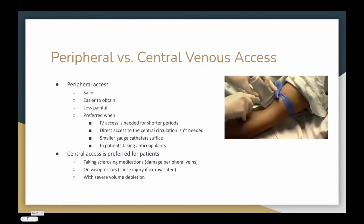Before getting into it, you can use peripheral or central venous access with ultrasound guidance. Peripheral access is more commonly used in the hospital because it's safer, easier to obtain, and generally less painful. It's preferred for patients who only need IV access for a short time and don't need direct access to central circulation. Central access is preferred for patients taking sclerosing medications, on vasopressors, or with severe volume depletion.